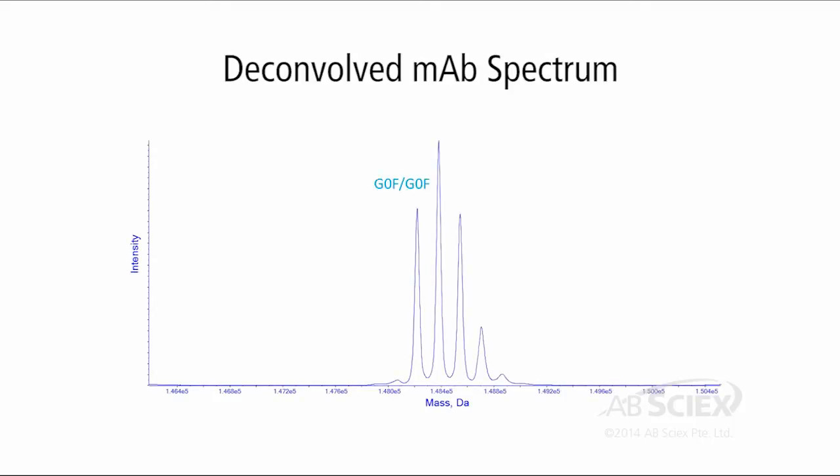Routine biologics analysis includes intact molecular weight analysis and peptide mapping. With AB SCIEX triple-TOF instruments, high-resolution data is generated for intact proteins and antibodies, providing useful information on protein identity by comparing the measured mass with expected. Post-translational modifications, such as glycosylation, are clearly revealed at the intact level.